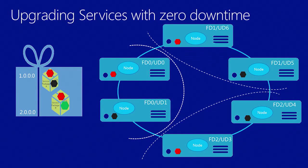Service Fabric offers you a control that allows you to perform a zero downtime upgrade. This is for both stateless as well as stateful Service Fabric applications, which basically means that you might have a lot of clients connected to your Service Fabric application and you can actually perform an application upgrade that is live without taking down your application, and your clients never have to get an error in response.